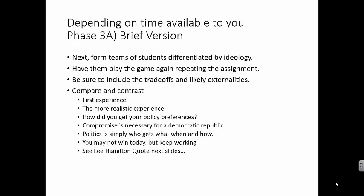I would like to play the game one more time, placing students into teams based on their political ideologies to simulate Congress. Now, decisions are made by majority decision of each group. Try to get each group to have an odd number of students. Again, each group must keep a list of the spending cuts or increases, and the trade-offs, likely future consequences, and externalities.